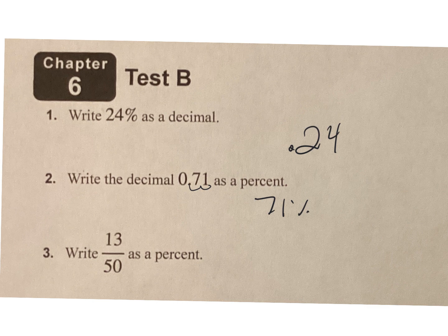On 13 over 50, all you have to do is divide that — 13 divided by 50 — that gets me 0.26. Move the decimal over 2, and I get 26%.